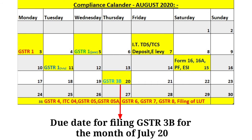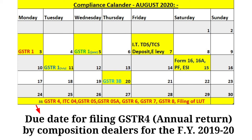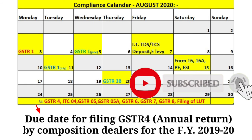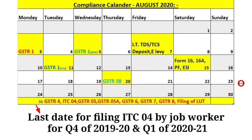20th August is the due date for filing GSTR3B for the month of July 2020. 31st August is the due date for filing GSTR4, that is the annual return by composition dealers for financial year 2019-20. It is also the due date for filing GSTR4 by the job worker for Q4 of 2019-20 and Q1 of 2020-21.